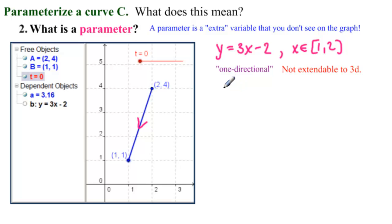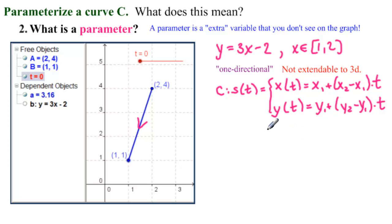And what is the formula for this? We take C as our curve, S of T, and X of T is equal to X1 plus X2 minus X1 times T. And Y of T equals Y1 plus Y2 minus Y1 times T. And you can easily see that this is extendable to three dimensions. We would just say ZT equals Z1 plus Z2 minus Z1 times T.